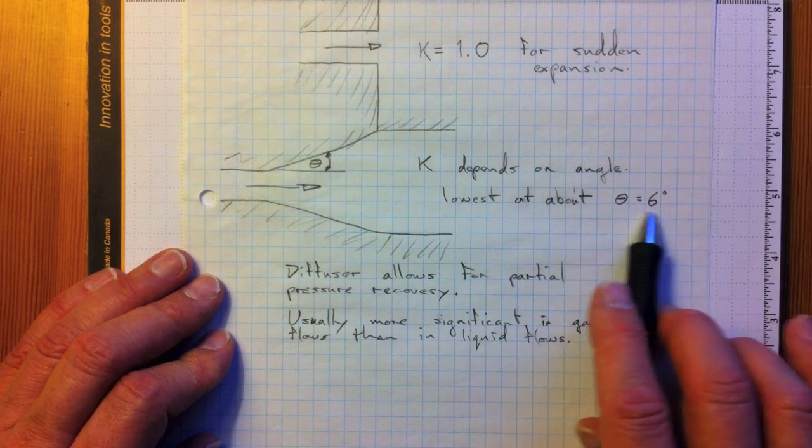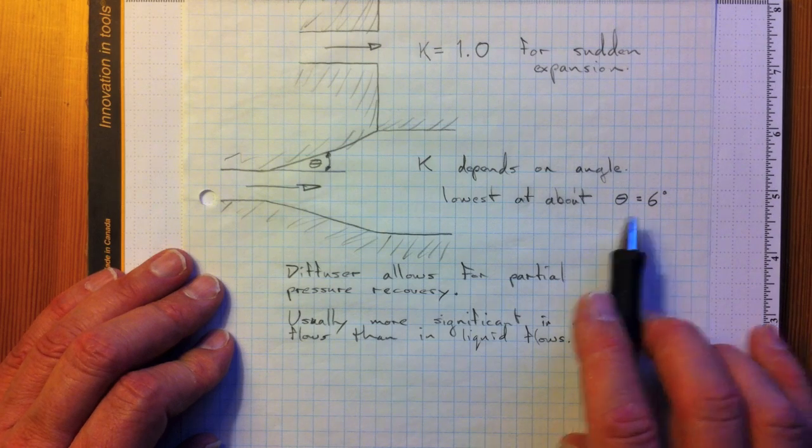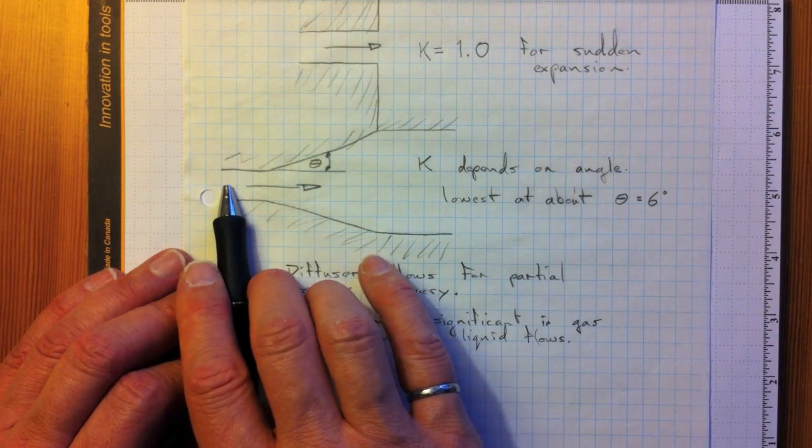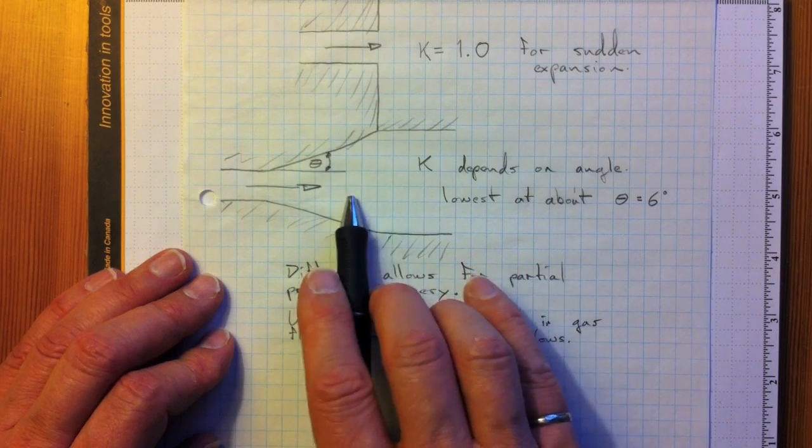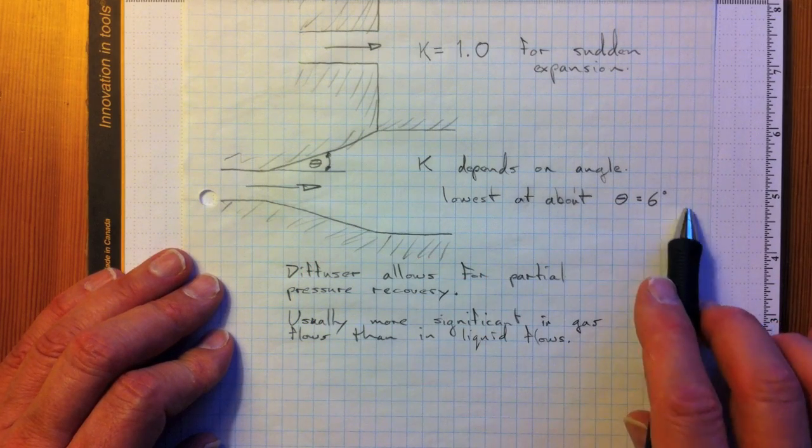But to do that, if you have that angle, you'll get close to getting the full Bernoulli recovery. So v squared over 2g here will mostly turn into p over rho g by the time you get out to here, at an angle of around 6 degrees.